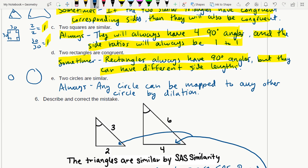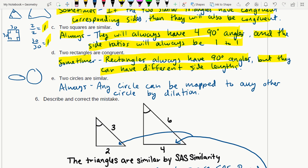I can always dilate one circle so that it becomes any other circle, so it maps onto another circle. It doesn't have any angles, so I don't need to worry about that. I can always dilate one circle so that it matches with another one. All you gotta do is dilate - that's always, always.